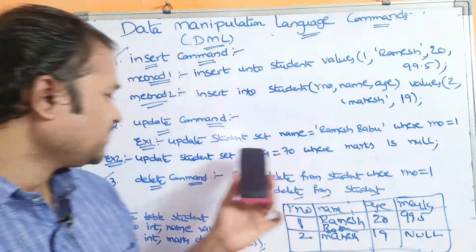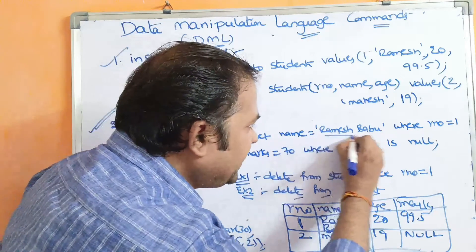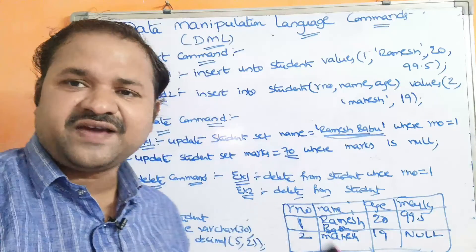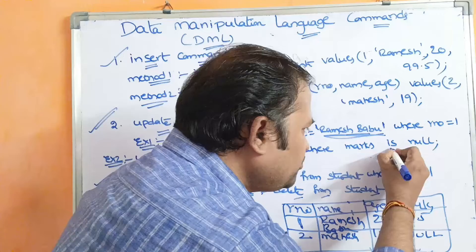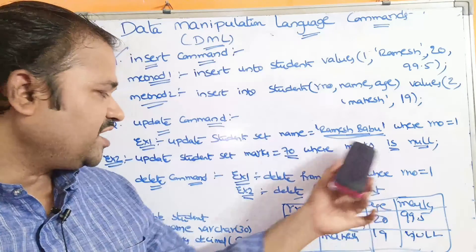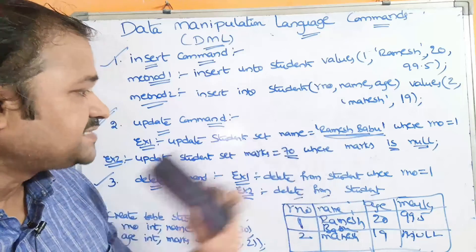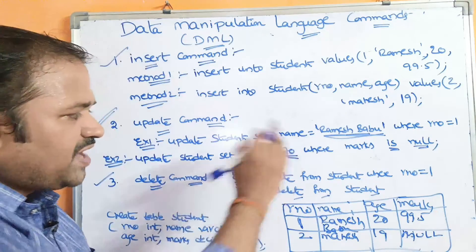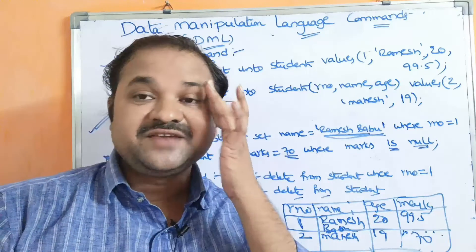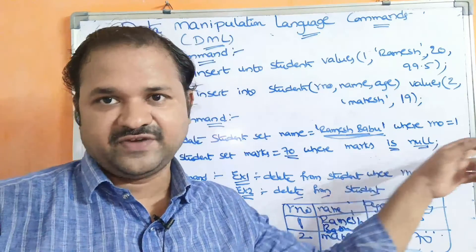Let us see one more example: UPDATE student SET marks = 70 WHERE marks IS NULL. Here, 'Ramesh Babu' uses quotations because it is varchar — characters must be enclosed in quotations. But 70 is an integer value, so there is no need for any quotation. We have to use the IS operator when we are comparing based upon null. Here null is stored in marks, so if the marks is null, we have to update marks as 70. We can't write marks = null — we must use the IS operator when comparison is made based upon null.